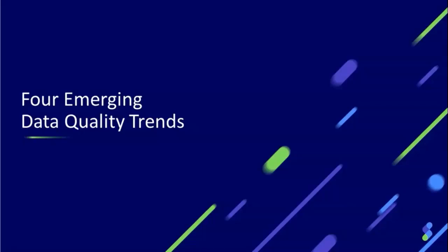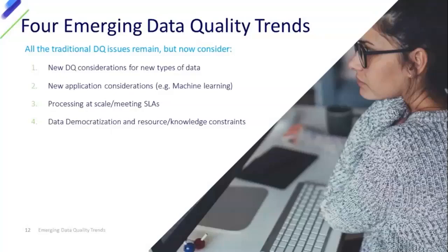What I want to do now is look at four key trends. It's important to state that this doesn't mean our traditional data quality goes away — those issues remain. We still have to deal with data quality challenges we've established over the years. But there are some additional pieces that we now need to consider.